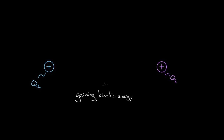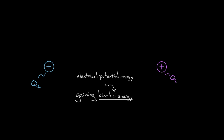If you believe in conservation of energy, this energy had to come from somewhere. The source is the electrical potential energy. We would say that electrical potential energy is turning into kinetic energy. Originally in the system there was electrical potential energy, and then there was less electrical potential energy but more kinetic energy. As the electrical potential energy decreases, the kinetic energy increases, but the total energy in this two-charge system would remain the same. The kinetic energy is coming from the electrical potential energy, and the letter physicists typically use to represent potential energies is U.